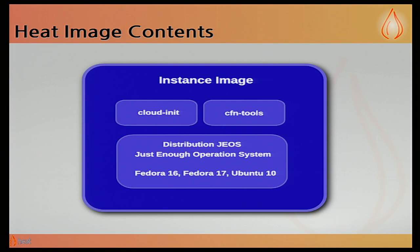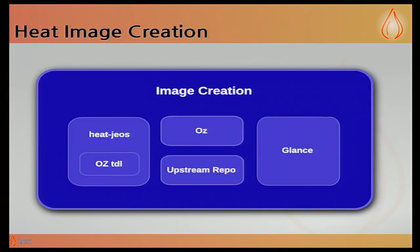What happens is CloudInit starts and runs the user data, and calls CNF tools if they're in your template. To create the image, we've got a tool that helps you create that Geos. We've got basically a library of Oz TDLs — Oz is a way to have an XML template and create and install a distribution. You can also use Oz directly. We also have a heat Geos tool that registers or creates a Geos with clients with the correct name, so that when the template gets created it'll find the correct image and build up your template more reliably.